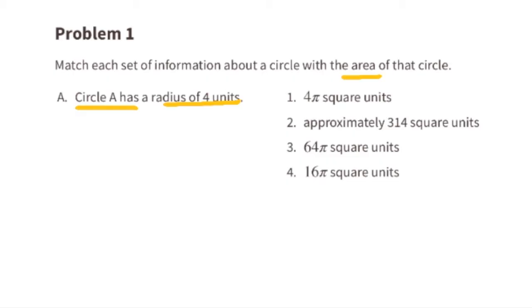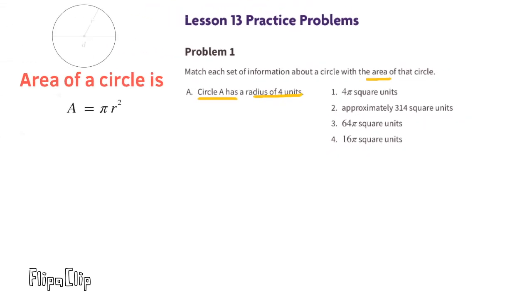A. Circle A has a radius of 4 units. The area of a circle is pi times r squared, and in this case, r is 4, so 4 squared is 16. The area of this circle is 16 times pi. This matches with number 4, 16 pi square units.